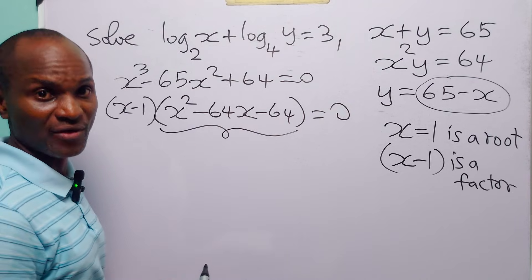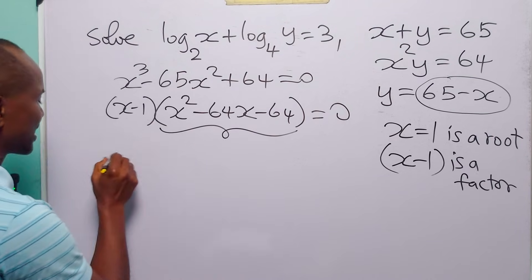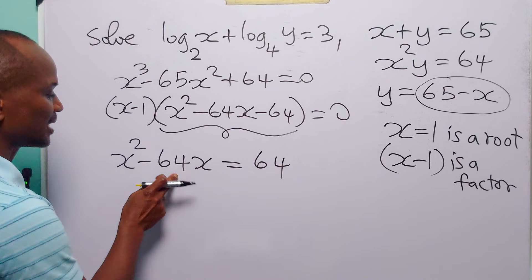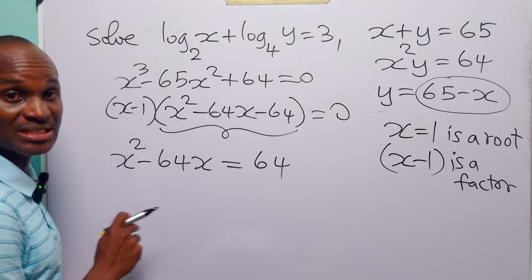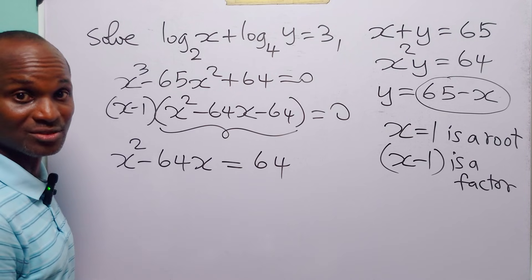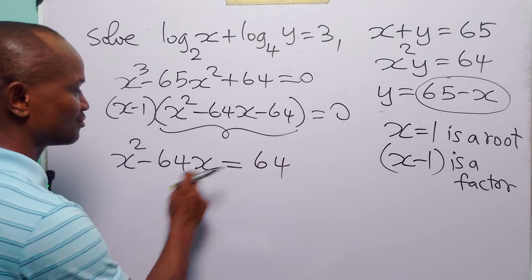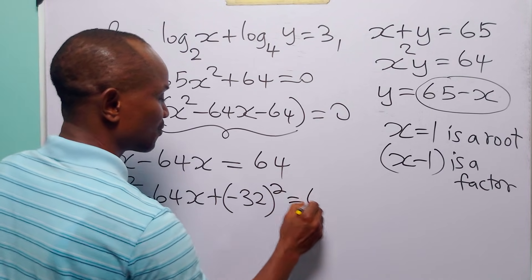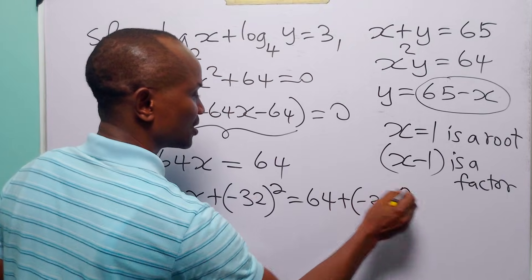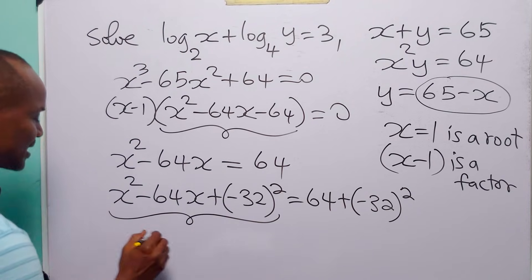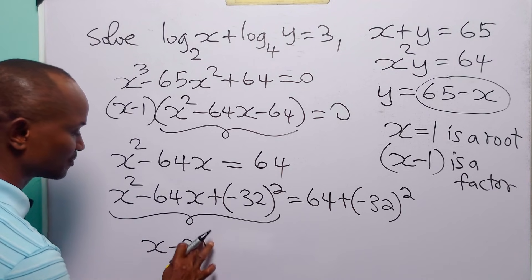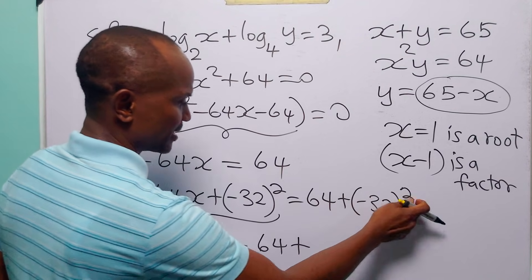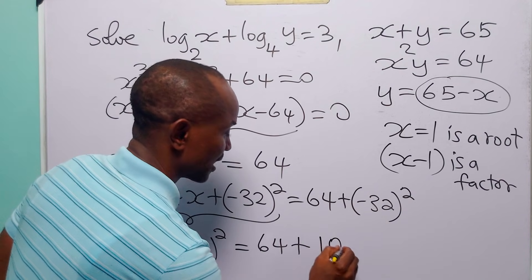We cannot solve this quadratic equation by factorization, so let us solve it by completing the square. We have x squared minus 64x is equal to 64. We add the square of half the coefficient of x to both sides. The coefficient of x is minus 64, so half of it is minus 32, and minus 32 squared is 1,024. So we have x squared minus 64x plus 1,024 is equal to 64 plus 1,024, giving the perfect square (x minus 32) squared.